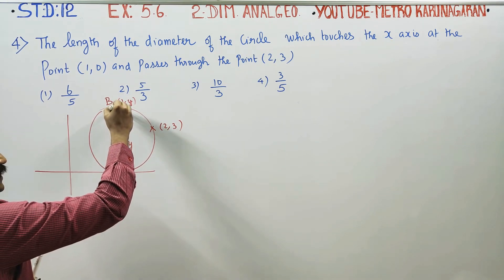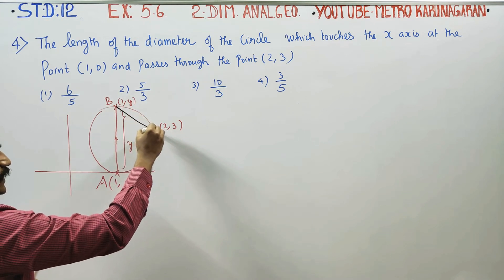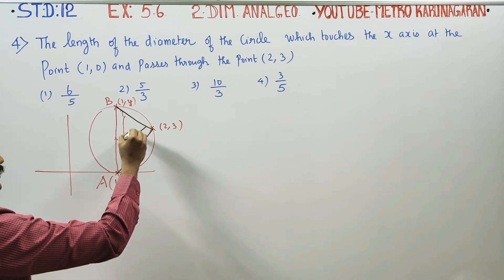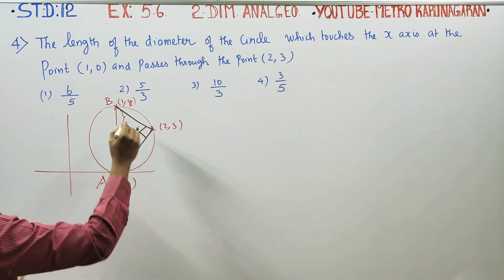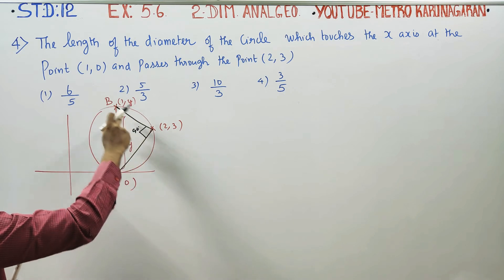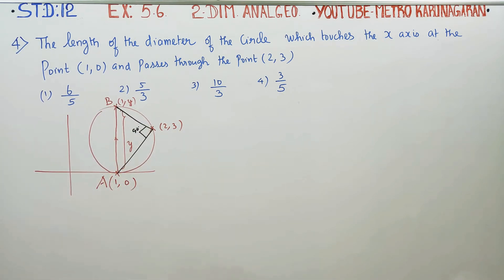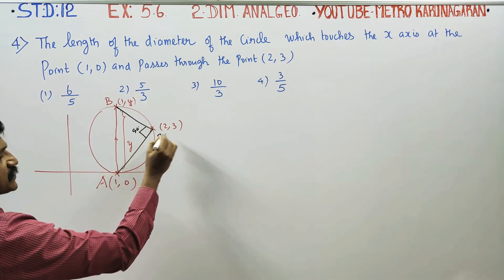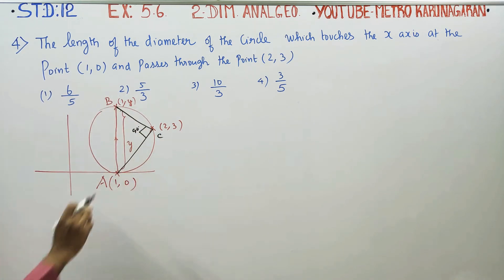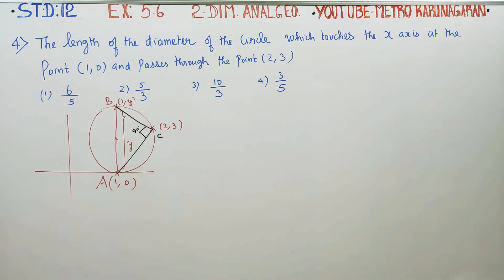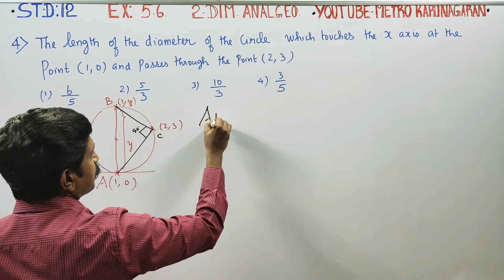The angle subtended by a diameter is always 90 degrees. The angle in a semicircle is always 90 degrees. So we have points A, B, C and we will use the Pythagoras theorem to find the y value. First, I am going to find AB.